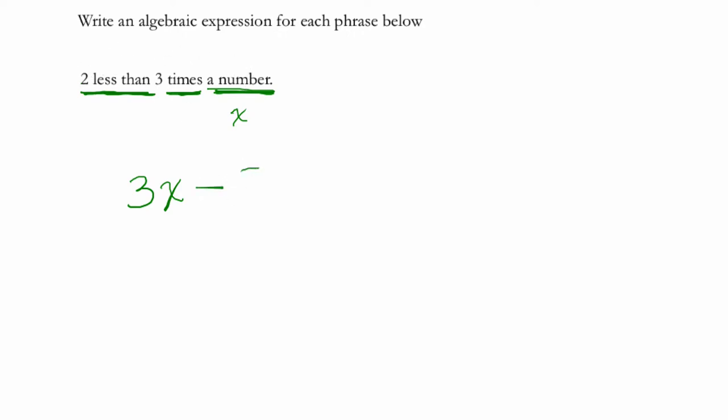Often students confuse this by writing 2 minus 3x, but this means three times a number less than two. It's almost backwards in a sense, right?